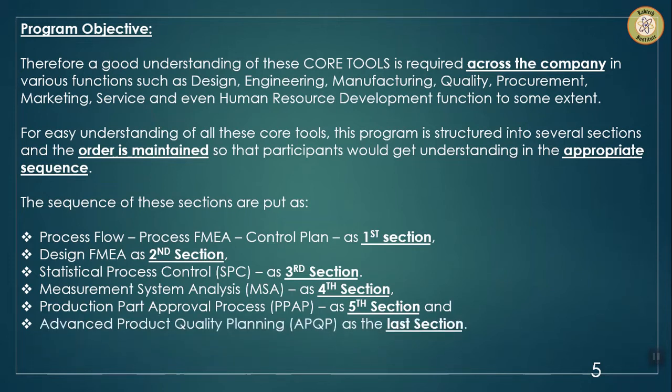Advanced product quality planning, APQP, is kept as the last section. Although it is the planning process and the start of all activities, it is placed last because effective advanced planning is only possible once participants truly understand all other core tools, since all other core tools form part of the planning. Once you are thorough with all other core tools, it will be very easy to understand APQP and complete a new product development project within the stipulated time frame, achieving customer and end-user satisfaction.